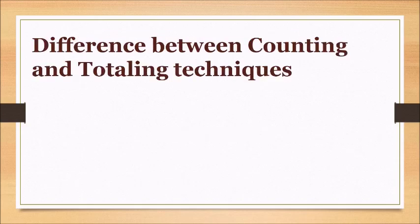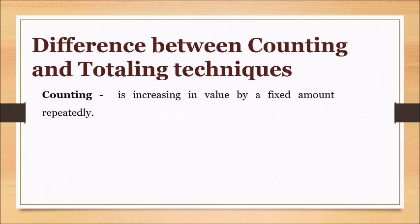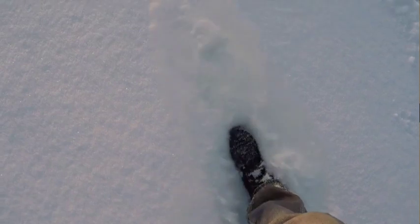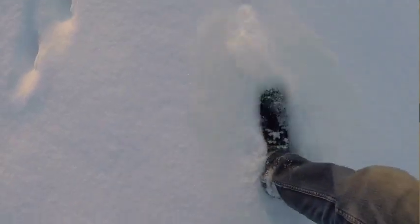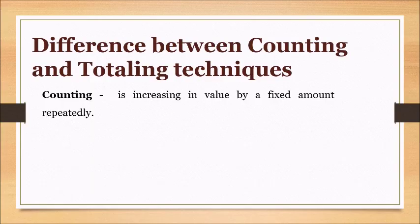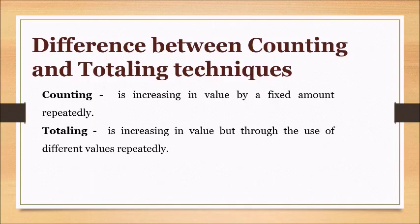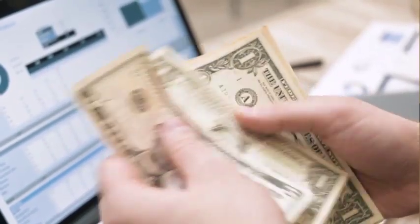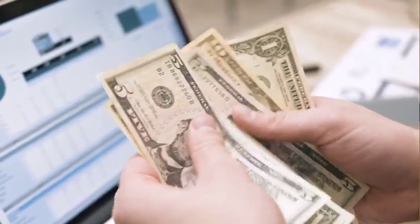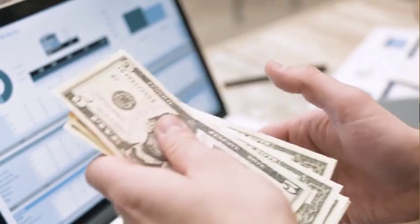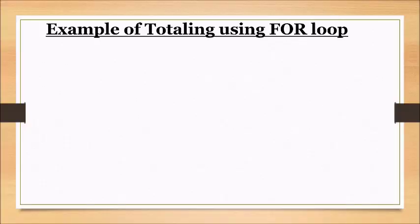You may be asking: what is the difference between counting and totaling? Using real-world examples — counting is simply increasing in value by a fixed amount. An example would be counting your steps when walking or exercising; with each step your count is consistently increased by one. Totaling is also increasing in value, however each amount is varied or not the same. An example would be totaling the money in your pocket — the value of each note is added to the previous total until all notes are added and you know the overall value.